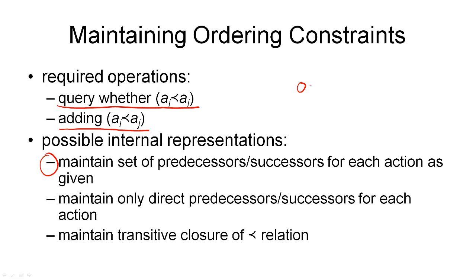The first internal representation is this one here, where we maintain the sets of predecessors and successors for each action simply as they were given to the constraint network. So if we have an action, and we say this is ordered with respect to some other action, and then we add more orderings as we go along, we would just store these as we were given. The first option is to store the orderings as given, which would store four ordering constraints in this case.